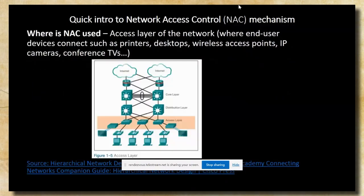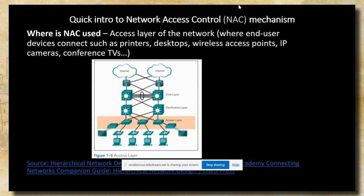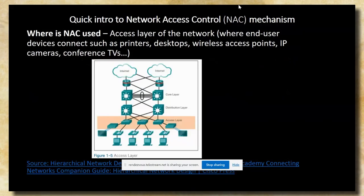Where is NAC implemented? It's implemented within the access layer of the network. In the given diagram, you will see that shaded rectangle, which shows the network layer where this is implemented. In other words, this means the point where your end device touches the network.